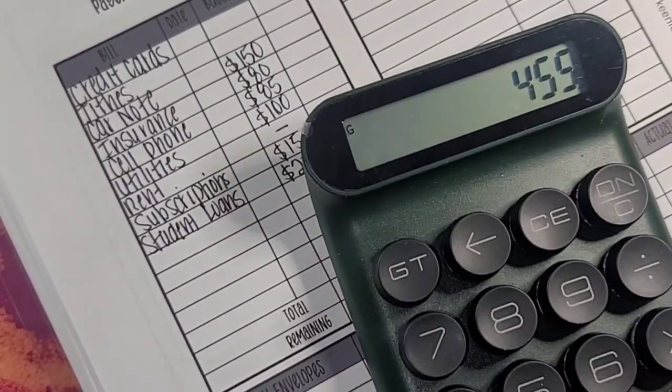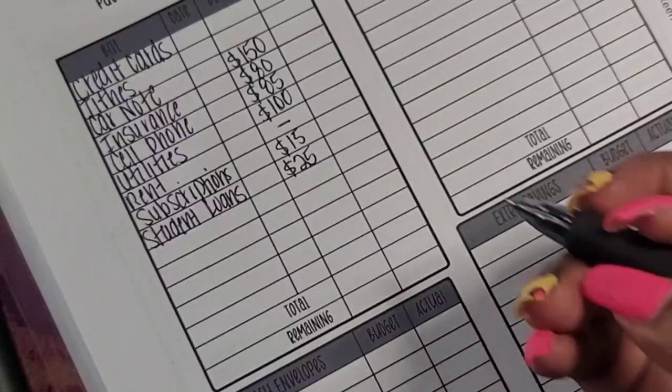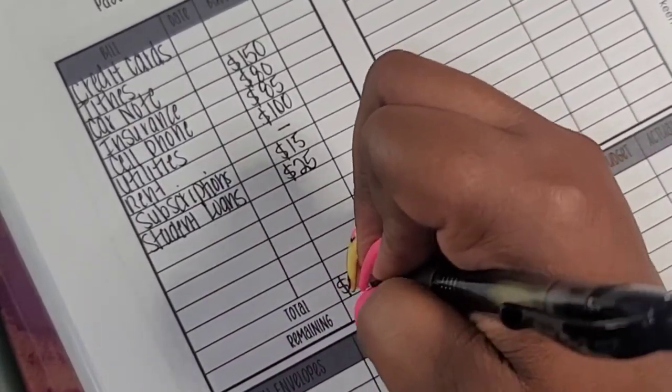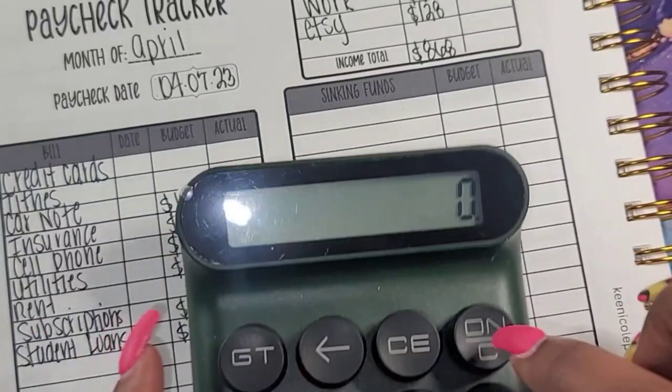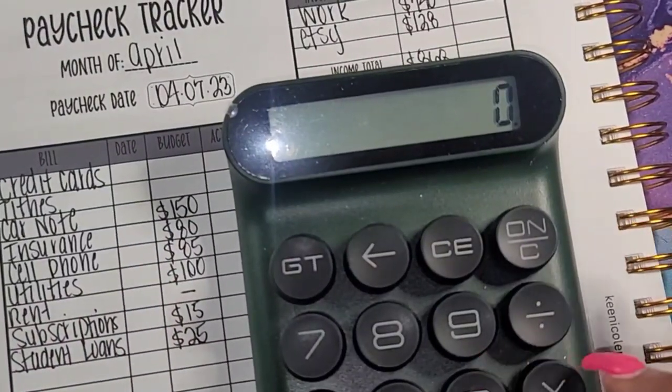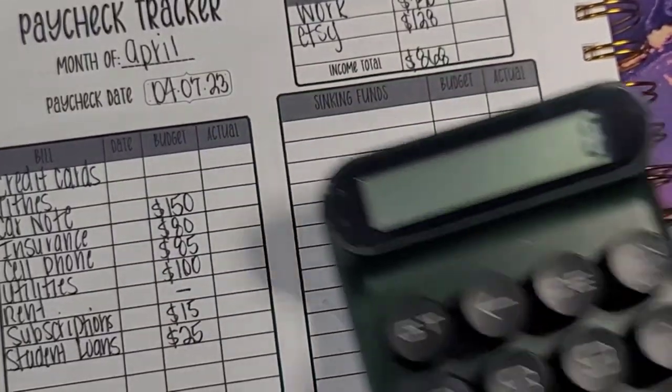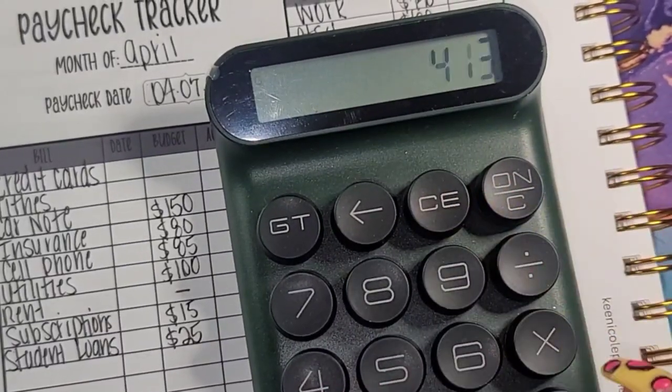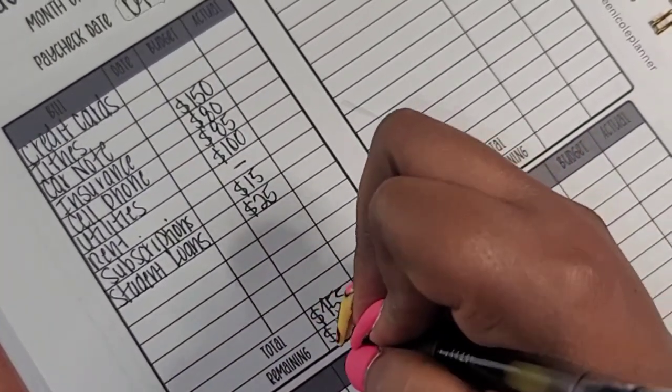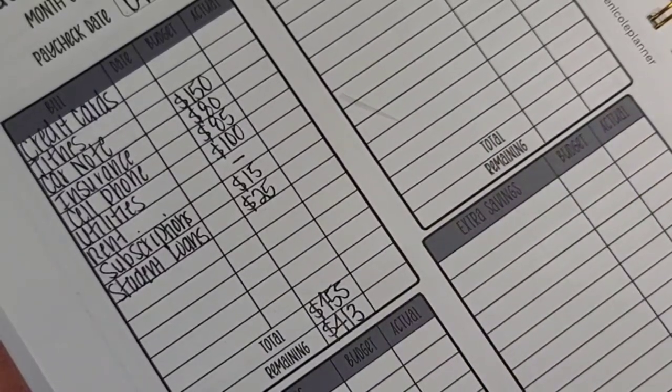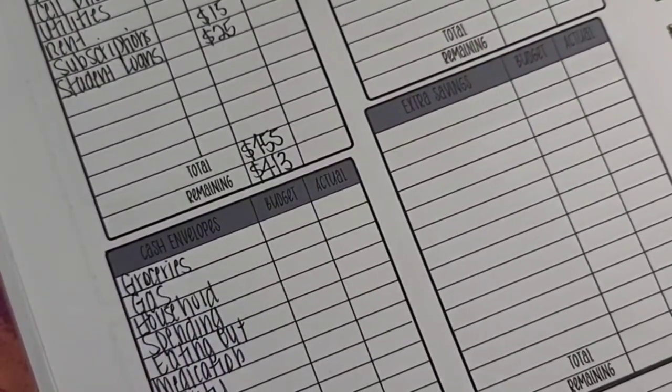So that gives me a total of $455. So now what I'm going to do, I'm going to take this $868 and subtract that $455. $868 minus $455. That gives me $413.